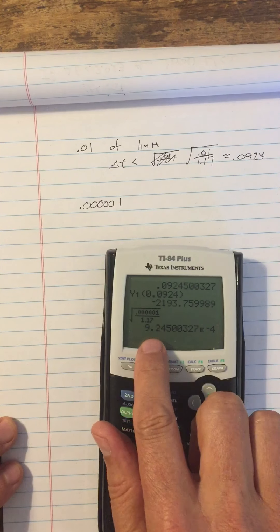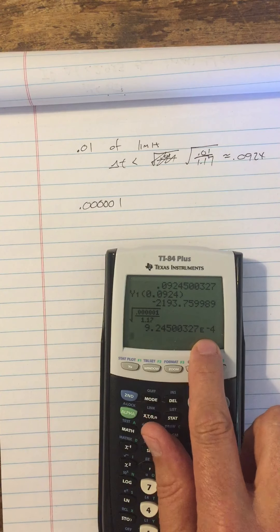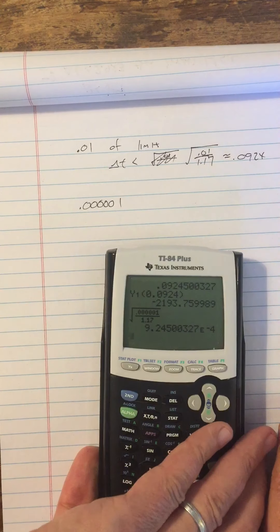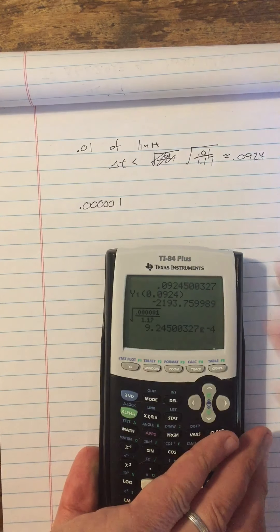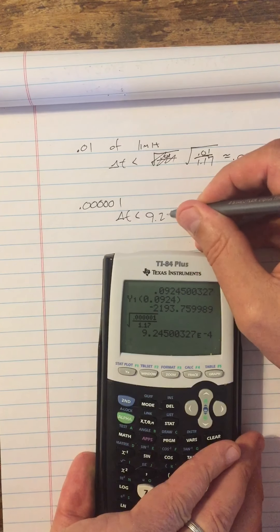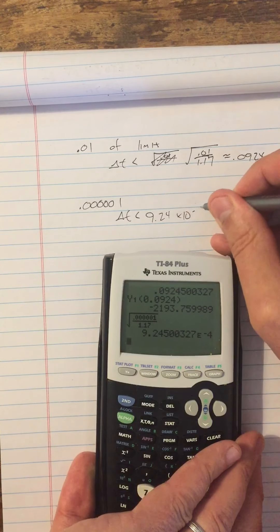And I just use 9.24 times 10 to the negative 4th. In fact, I can see that this 9, 2, 4, 5 is always coming up. I'm just doing times the power of 10. All right. A negative power of 10. All right. So we can use delta t as less than 9.24 times 10 to the negative 4th.